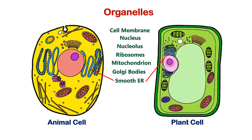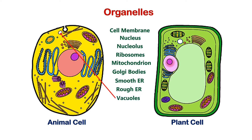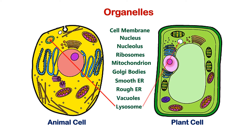Also present in both cell types are smooth endoplasmic reticulum, rough endoplasmic reticulum, vacuoles, lysosome, and cytoplasm.